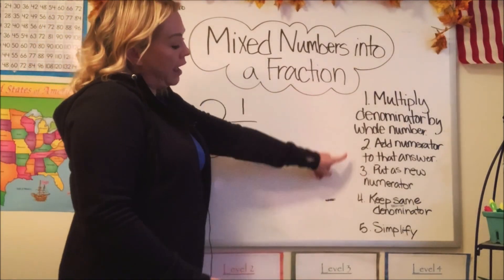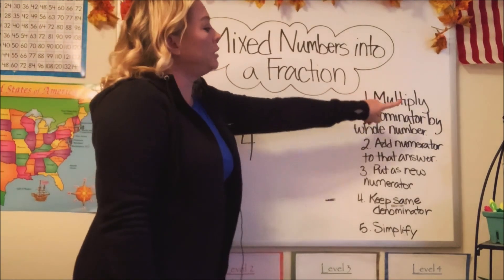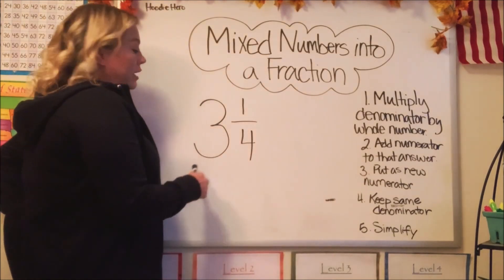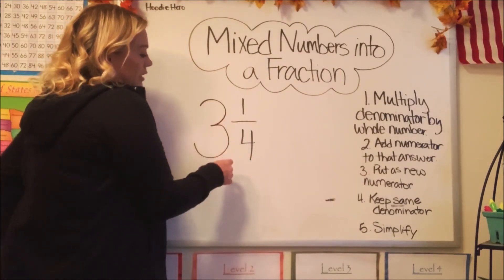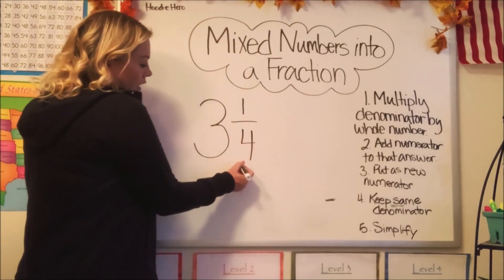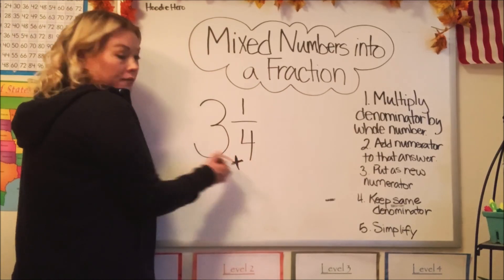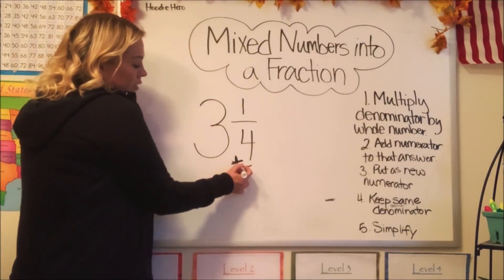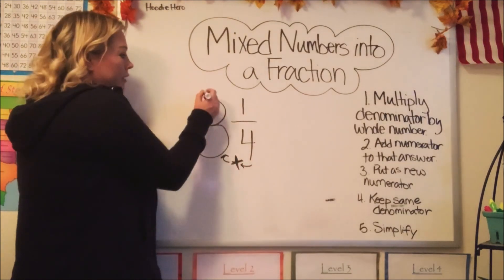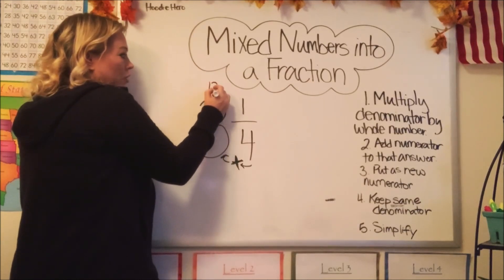I wrote the steps down on how we proceed with this. First step is we're going to multiply the denominator by the whole number. So in this particular mixed number, the denominator is four and we're going to multiply it. We're going to multiply the four by the three. What's four times three? It's 12.